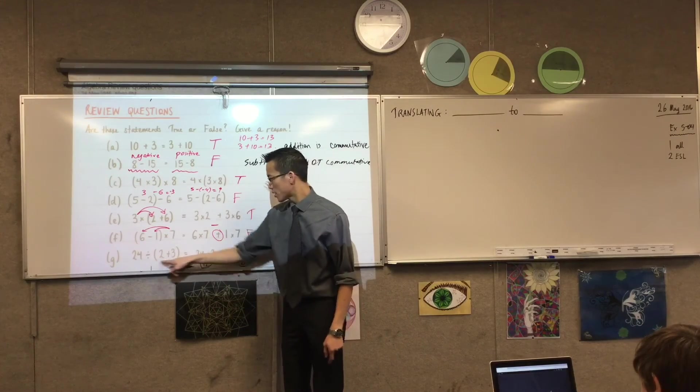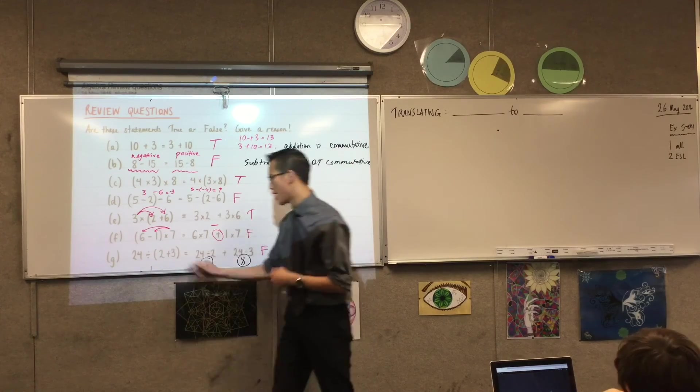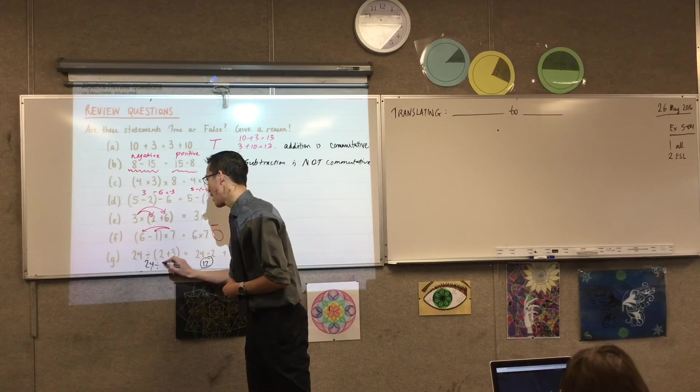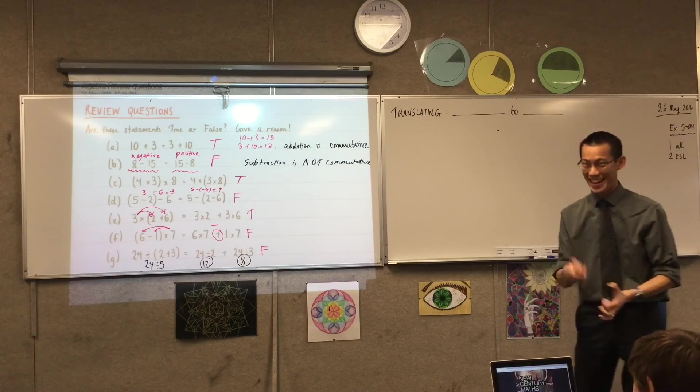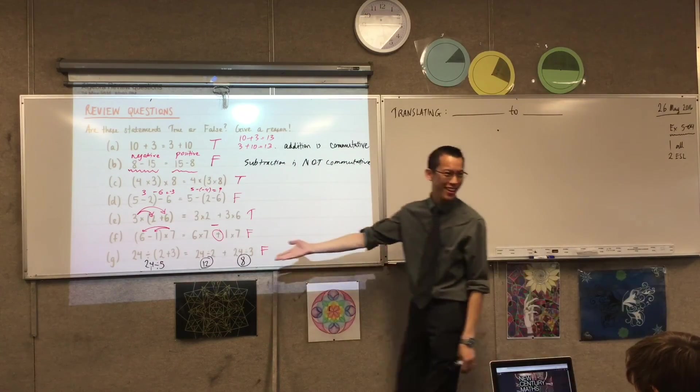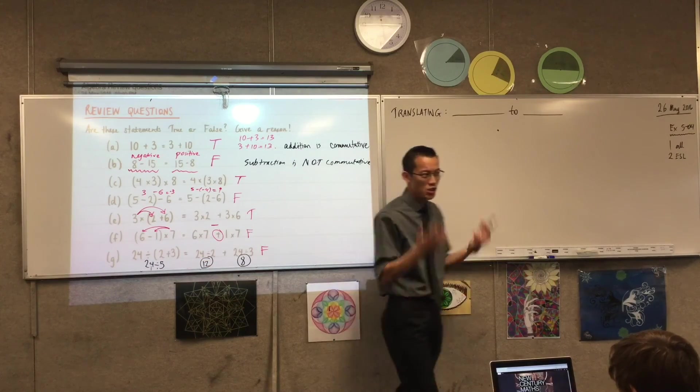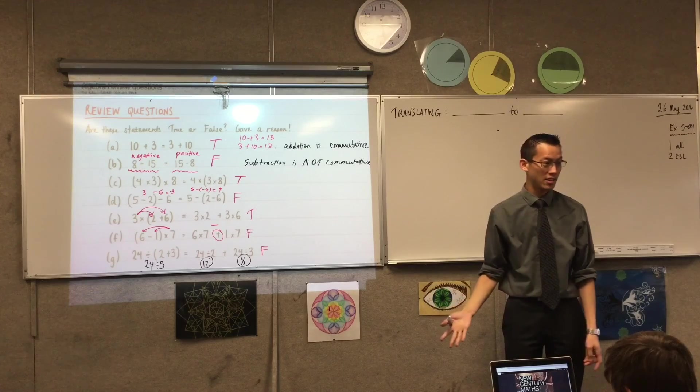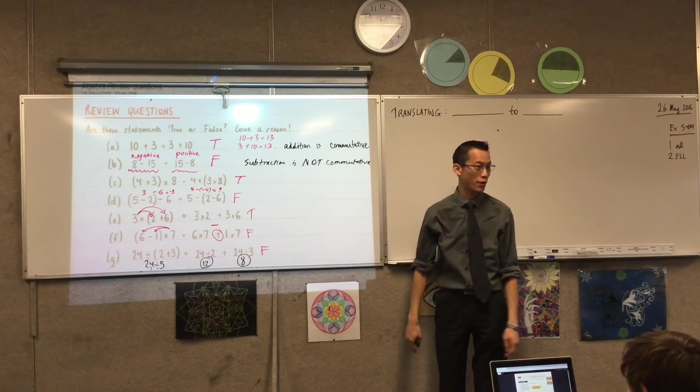But then when you look over here, what does this mean? This is 24 divided by 5? Now, 24 divided by 5, it's going to be some funny mixed number. But I can tell you what, it's definitely not going to be 20. This is much too big. So clearly this is wrong. Does that make sense? So you can settle it for yourself by doing the calculation. Or you can think about the principle, and both of those are great reasons for it. Okay?